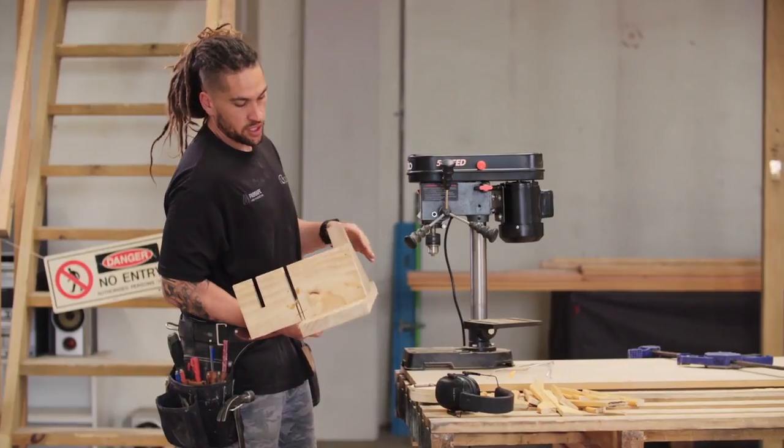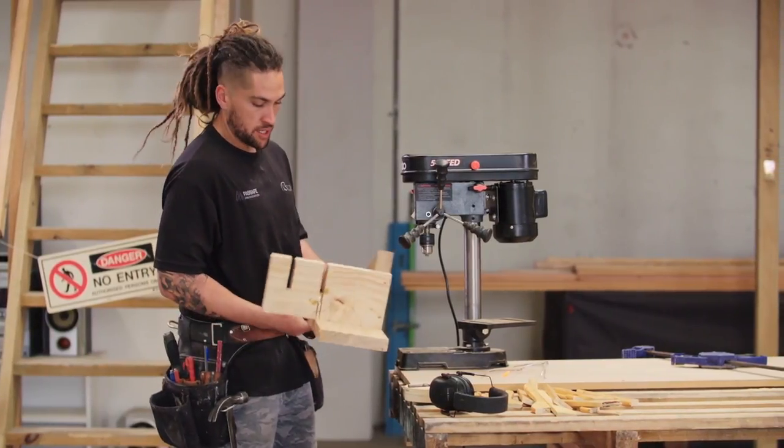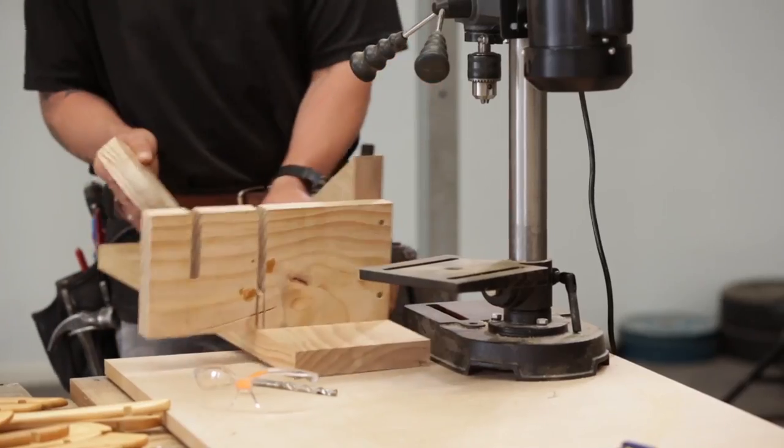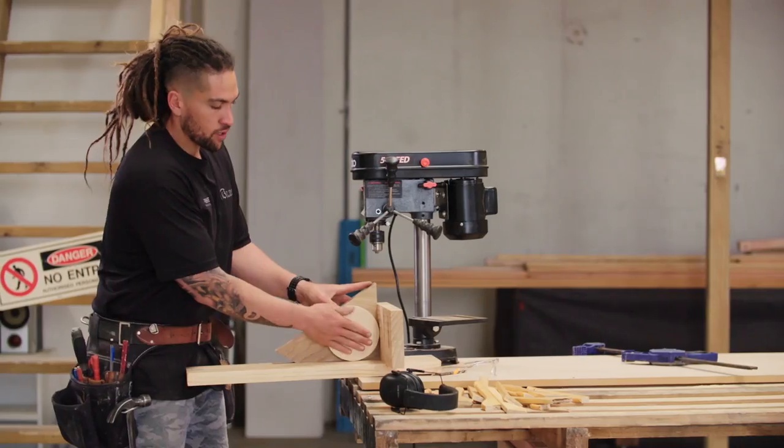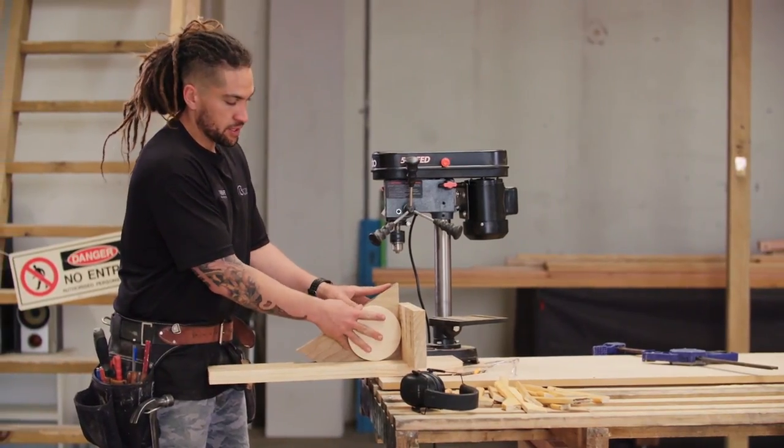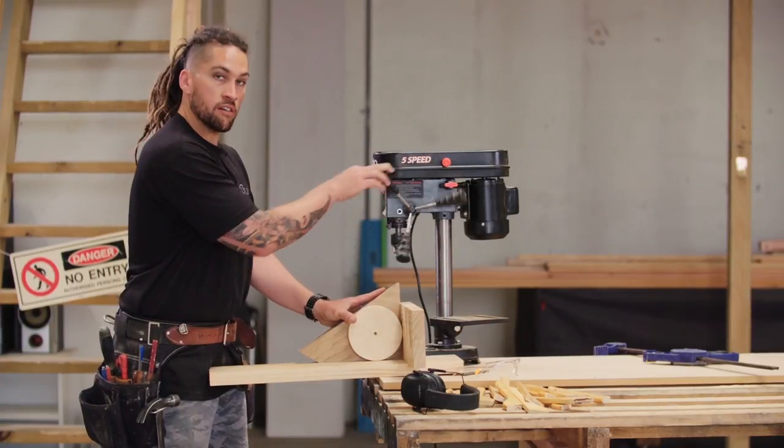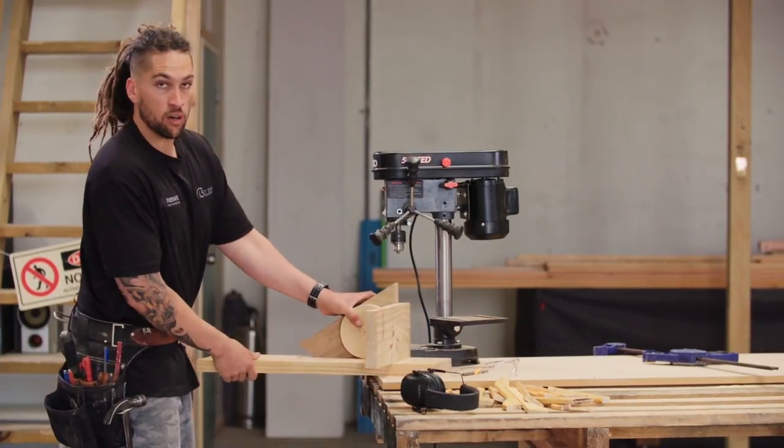I've made this jig up. All it is is just a couple of scrap pieces of timber. I've screwed them up square. We're going to put our block into that. That's going to hold our block perfectly plumb, perfectly square. So when we use our drill press, all our holes line up perfectly.